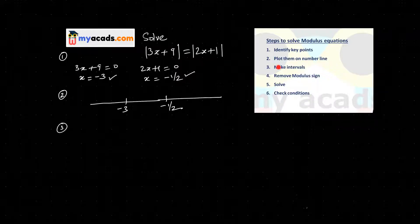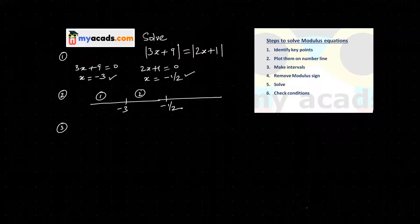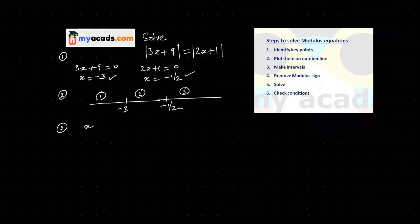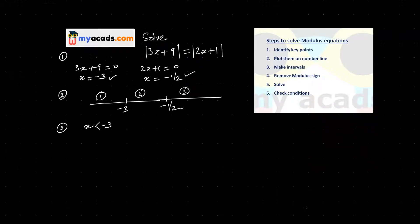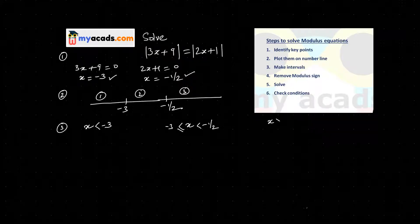My third step is to make intervals. Looking at these key points on the number line, we divide it into three intervals. The first interval is x less than minus 3. The second interval is x greater than or equal to minus 3 and less than minus 1 by 2. The third interval is x greater than or equal to minus 1 by 2.